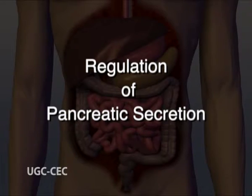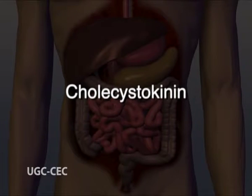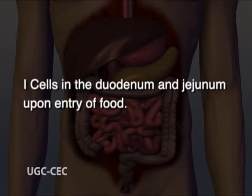Regulation of pancreatic secretion: the secretion from the exocrine pancreas is regulated by both neural and endocrine controls. During inter-digestive periods, very little secretion takes place, but as chyme flows into the small intestine, the pancreatic secretion is strongly stimulated. The pancreas is innervated by the vagus nerve. The most important stimuli for pancreatic secretion come from three hormones secreted by the enteric endocrine system. They are cholecystokinin, released by I cells in the duodenum and jejunum upon entry of food. As chyme floods into the small intestine, cholecystokinin is released into blood and binds to receptors on pancreatic acinar cells, ordering them to secrete large quantities of digestive enzymes.